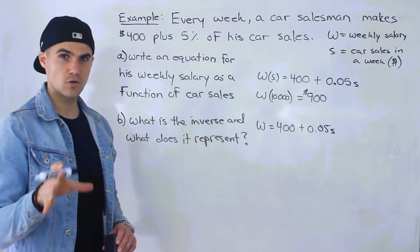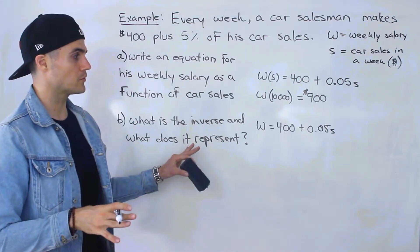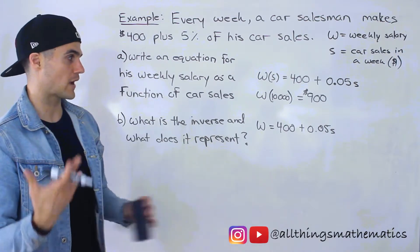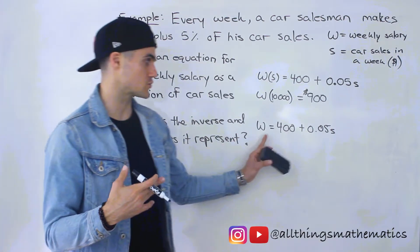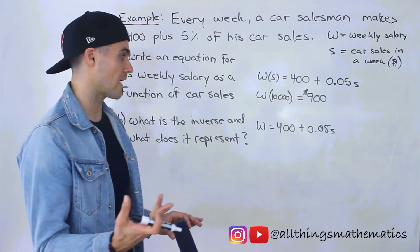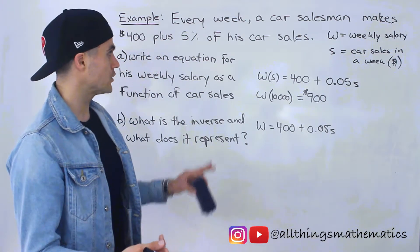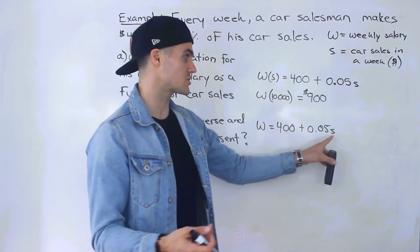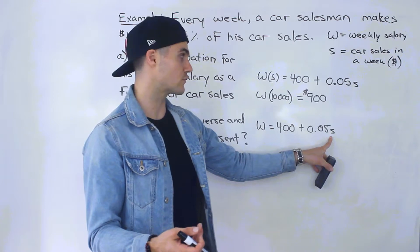Now usually, so far we haven't really done a word problem yet. We've been dealing with abstract functions, and the way we find the inverse for abstract functions is we switch up the variables and then we isolate for that y value. But when you're dealing with word problems, you don't actually switch these up. You just straight isolate for that other variable.